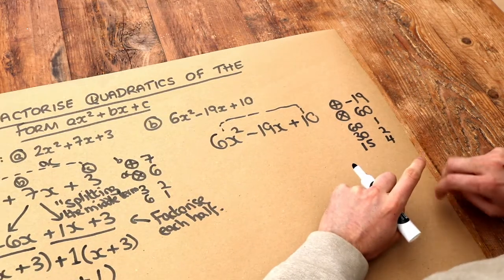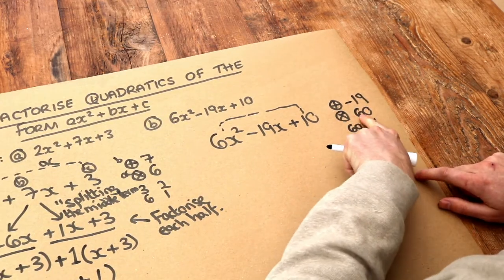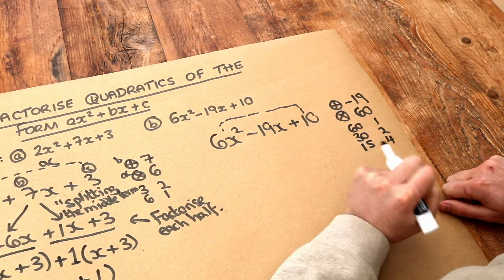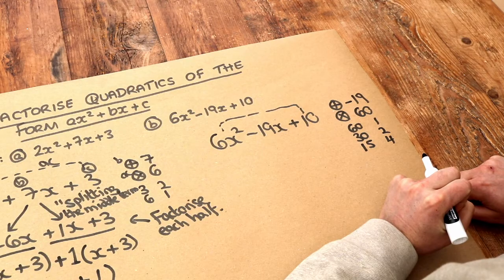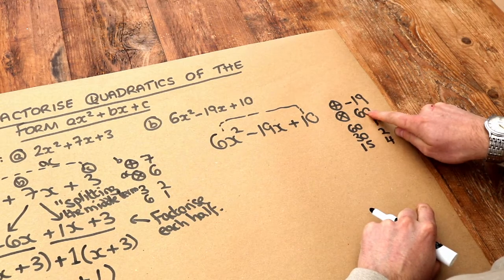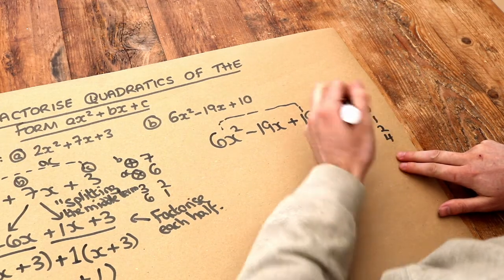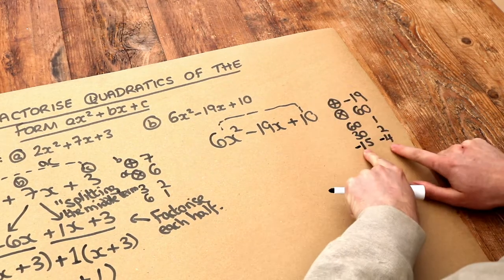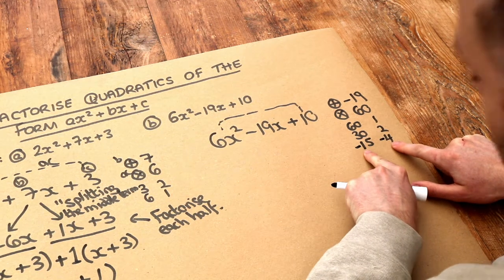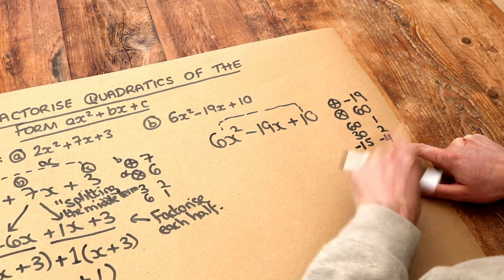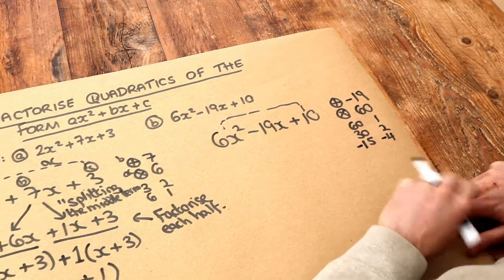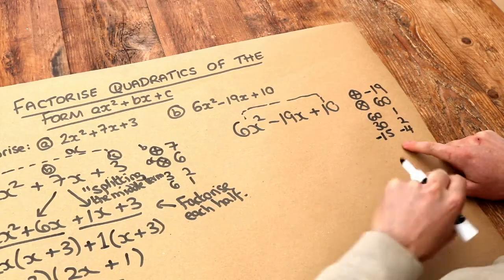Now let's think about the signs at this point. If they multiply to give a positive number, either both the numbers were positive, or both the numbers were negative. Now if they add to give a negative number, then they must have both been negative. So it's actually going to be minus 15 and minus 4, because look, those add to give minus 19, and then when you multiply them together, negative 15 times negative 4, negative times negative is positive, it'd be positive 60. So that works. And they could go either way around, it doesn't matter, you'll get the same answer.